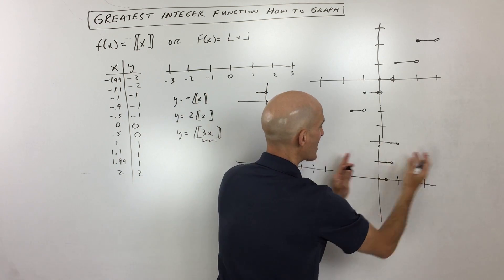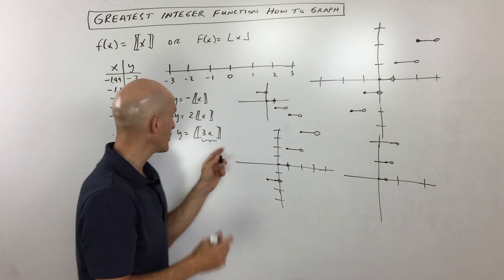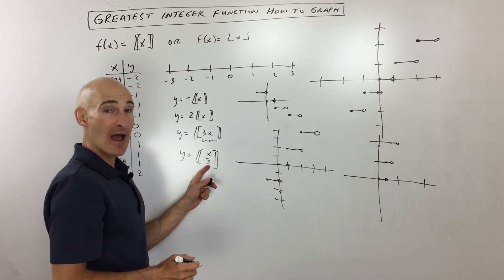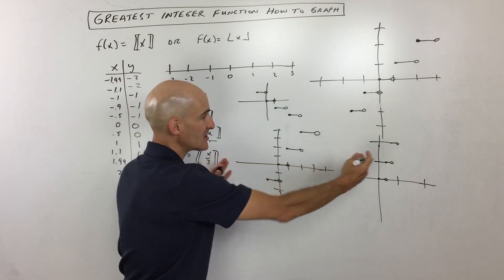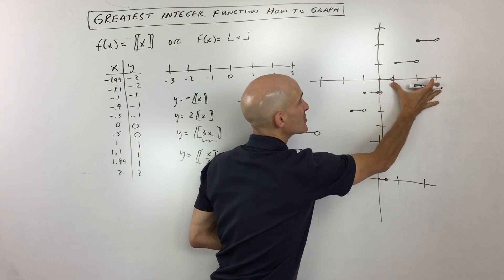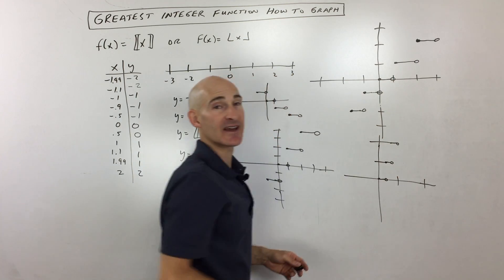So what's happening is it's actually compressing it horizontally. Now if this was y equals x divided by 3, then it would have the opposite effect. It would actually stretch these stairs, these steps, they would actually be three units long before it jumps up to the next stair.